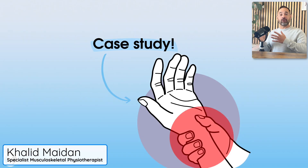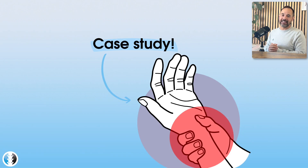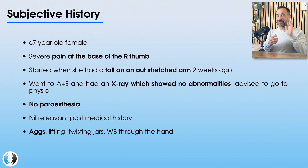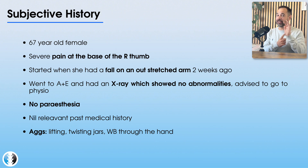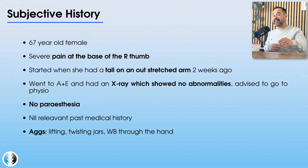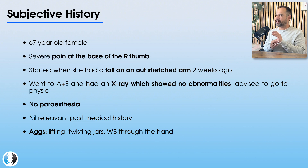So first of all, let's see what today's patient is presenting with. We have a 67-year-old female who presents with severe pain at the base of her right thumb, and this started two weeks ago when she fell onto an outstretched hand — walking in the street, fell over, reached out, and her right hand hit the floor first. Ever since then, she's had this pain in the base of her thumb.